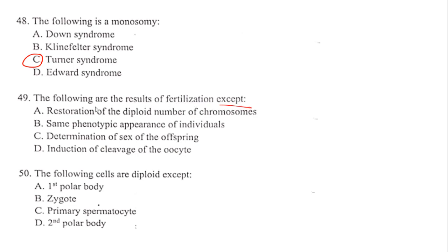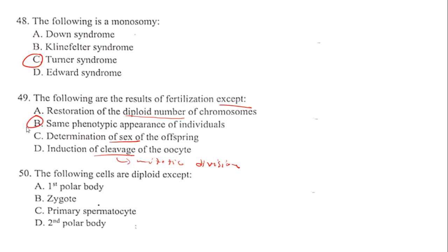The following are results of fertilization except one. During fertilization there is restoration of the diploid number of chromosomes, sex can be determined, and induction of cleavage occurs where the oocyte starts undergoing mitotic divisions — two cells, four cells, eight cells up to morula, which is formed by day three or four. The answer is B.